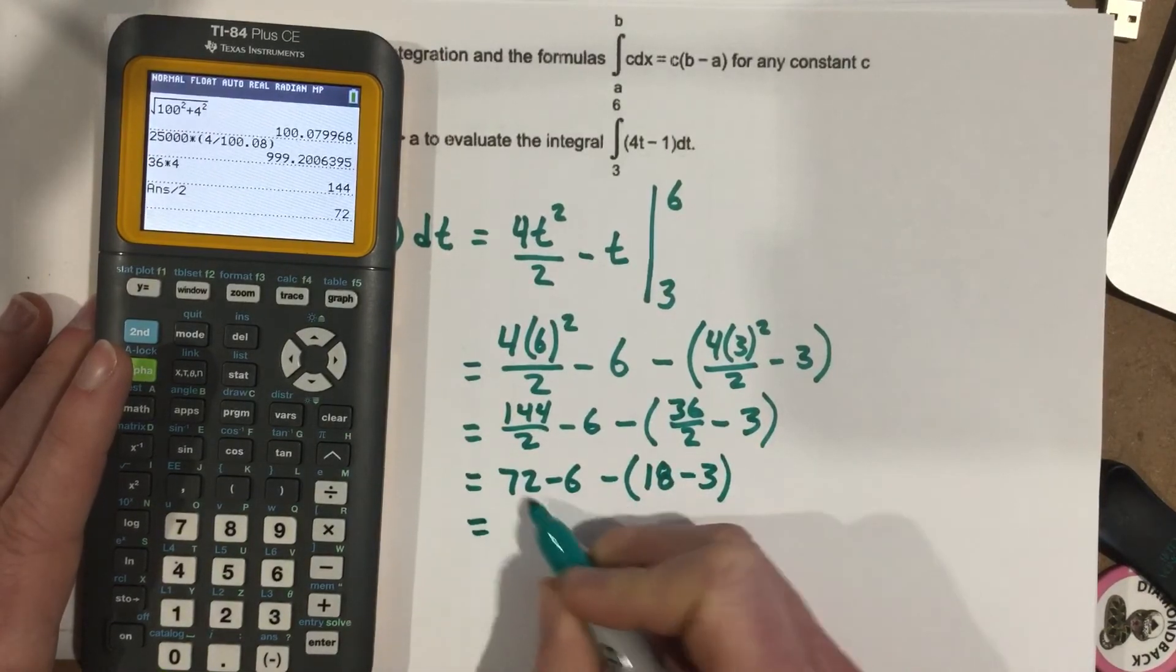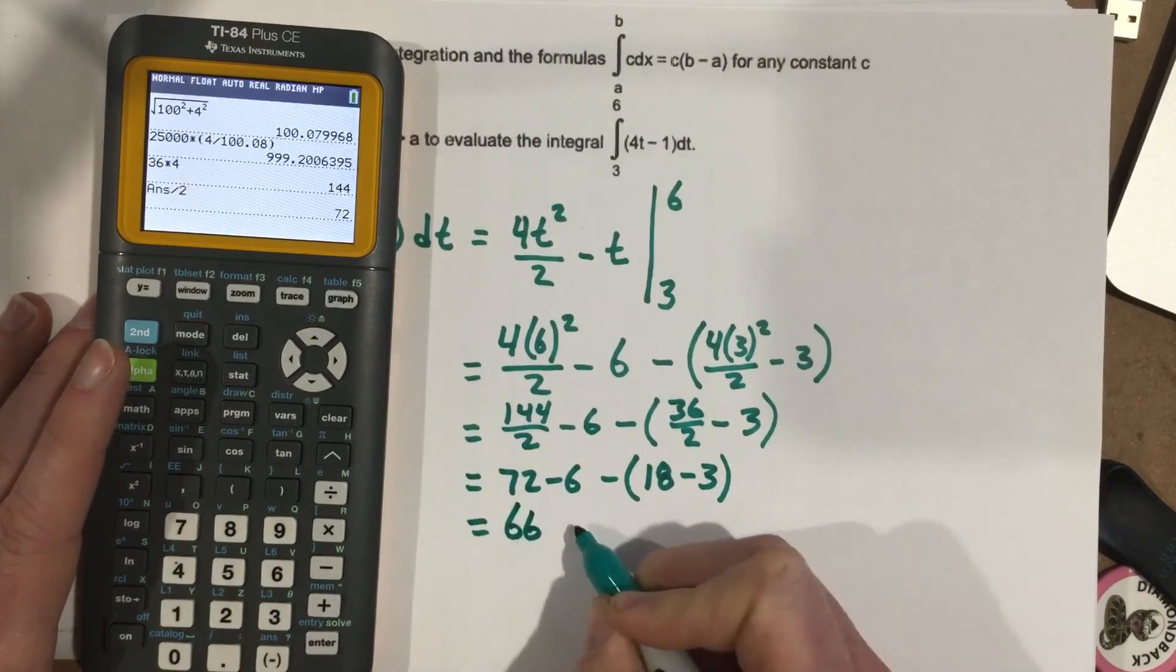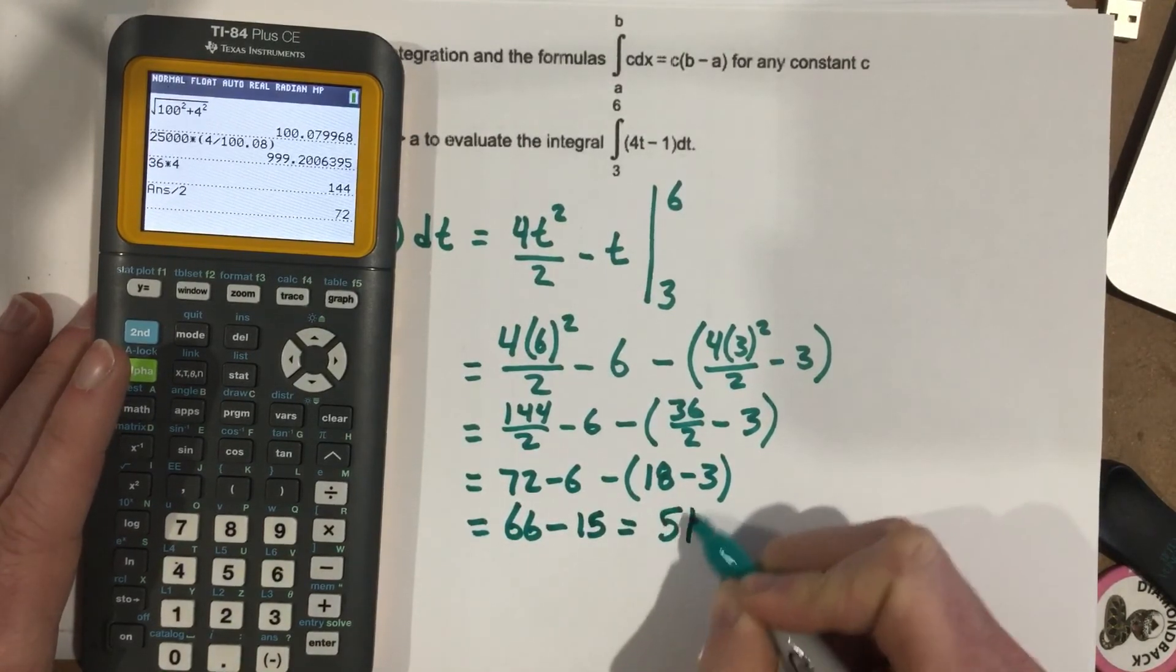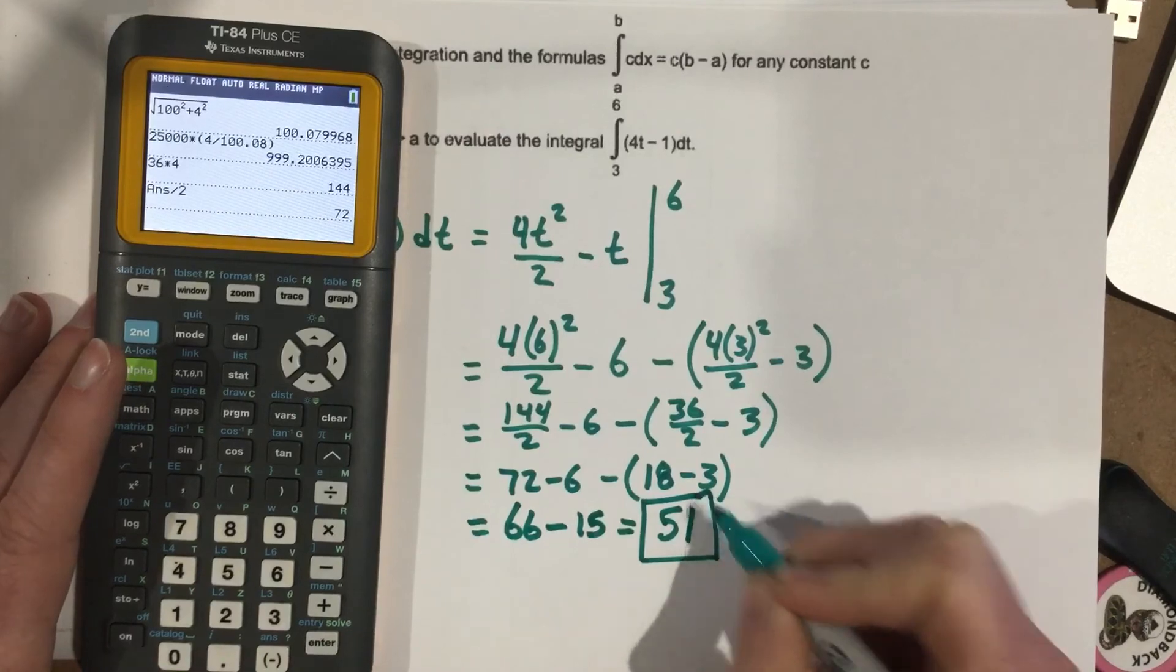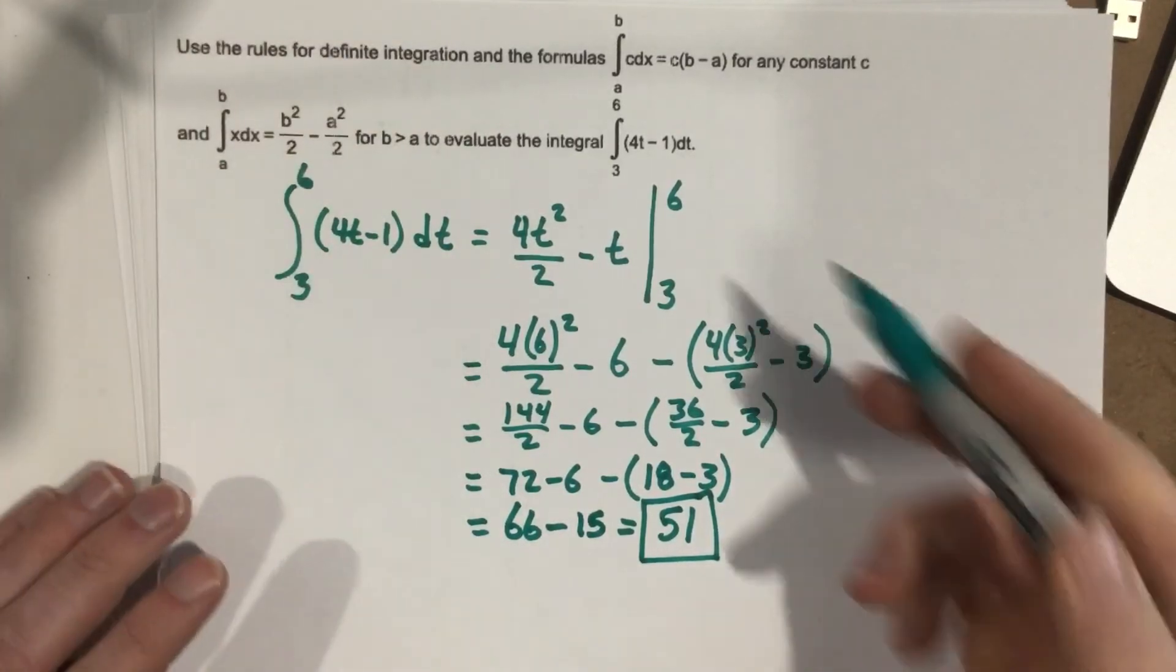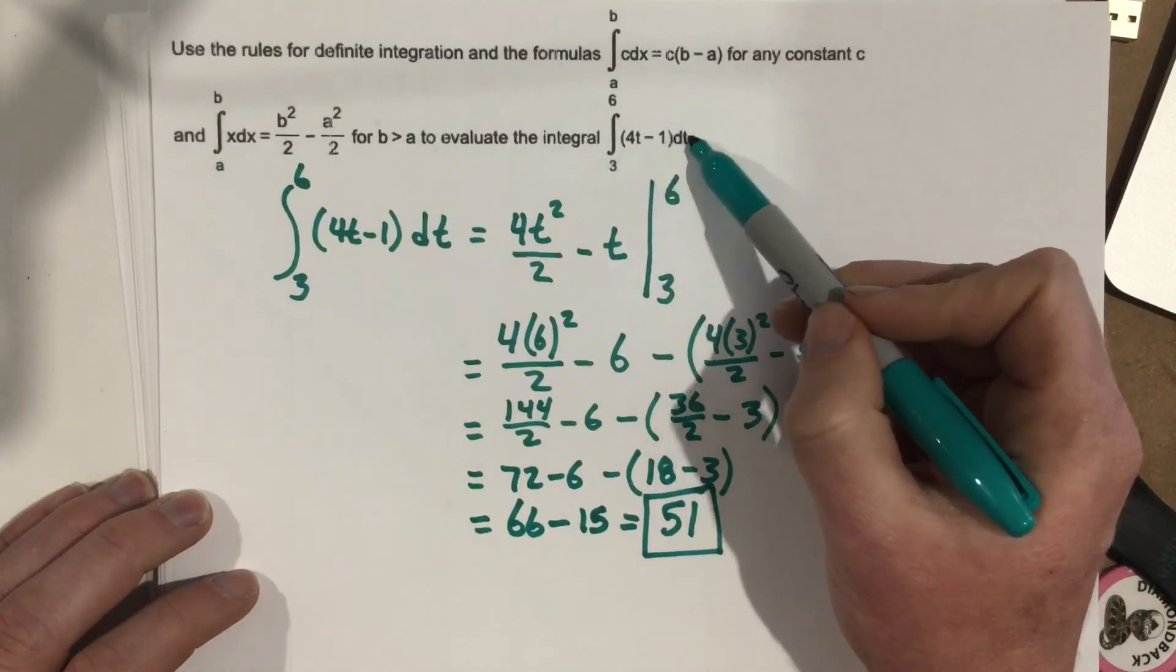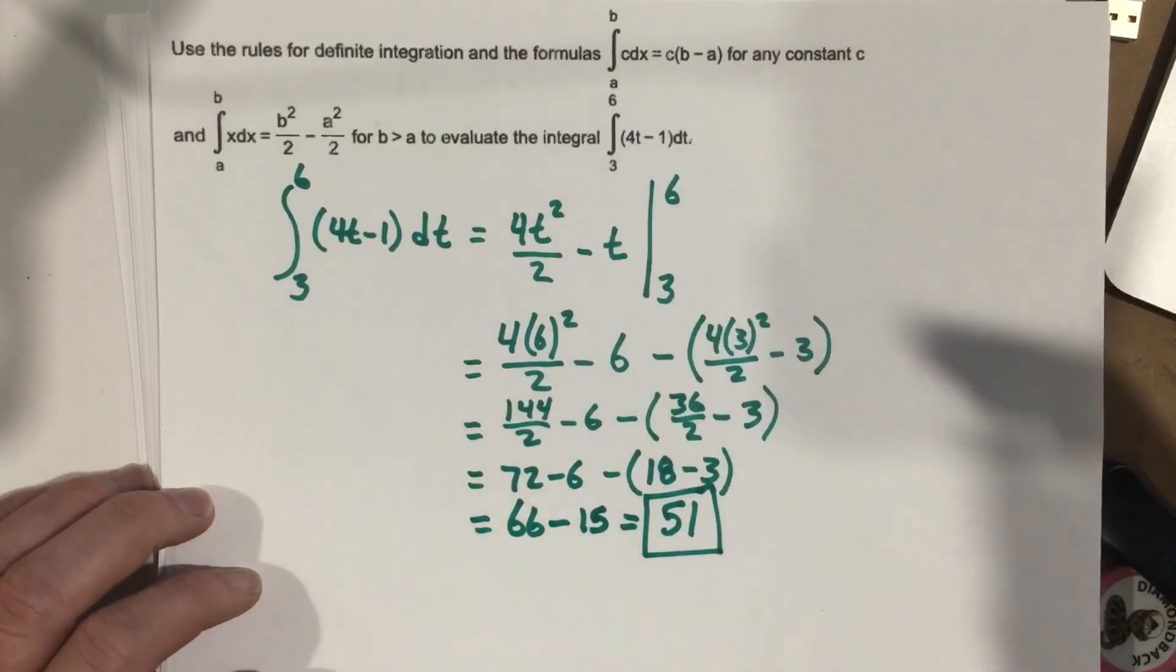I go ahead and evaluate that, that's 66 minus 15, which gives you 51. So the area of this is 51. So our integration of 4t minus 1 with respect to t from 3 to 6 is 51.